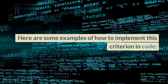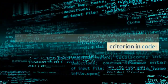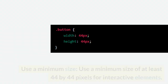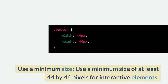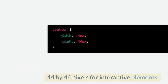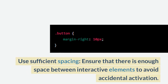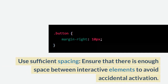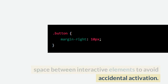Here are some examples of how to implement this criterion in code. Use a minimum size of at least 44 by 44 pixels for interactive elements. Use sufficient spacing — ensure that there is enough space between interactive elements to avoid accidental activation.